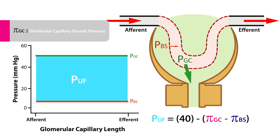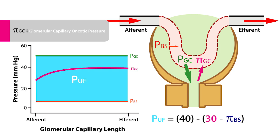PIGC opposes the glomerular capillary hydrostatic pressure by promoting the movement of fluid from the Bowman space back into the glomerular capillaries. The oncotic pressure represents the osmotic pressure that nonpermeable solutes exert within the glomerular capillaries. These nonpermeable solutes are comprised mostly of plasma proteins like albumin. The glomerular capillary oncotic pressure varies along the length of the glomerular capillary — it is lowest near the afferent end at about 25 or 30 mmHg, and rises to 40 mmHg or more at the efferent end.